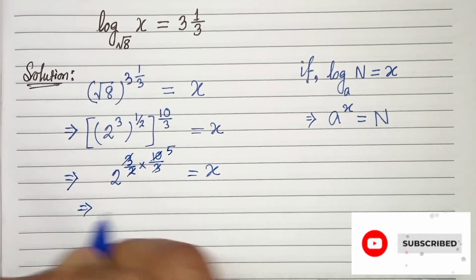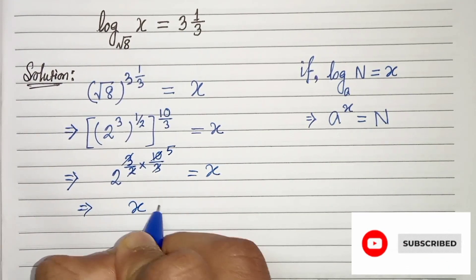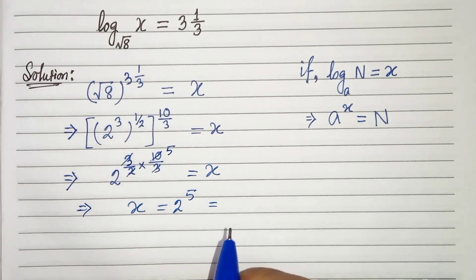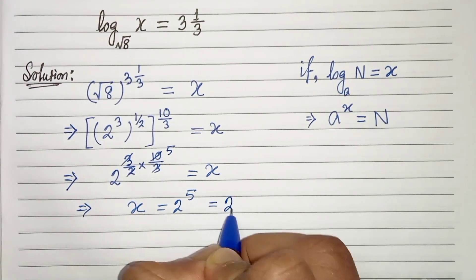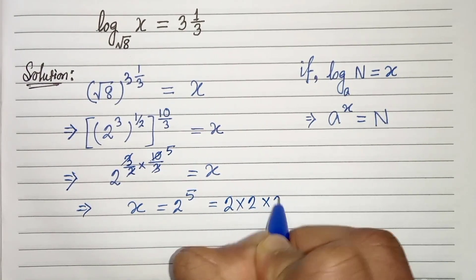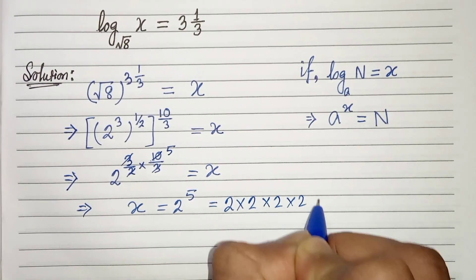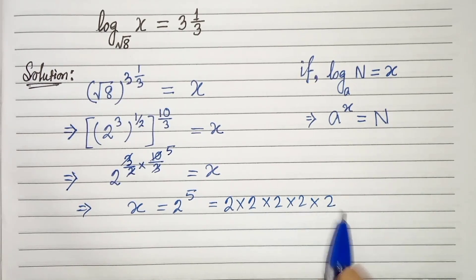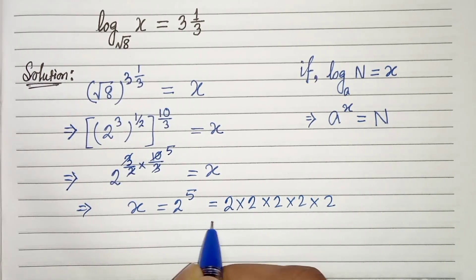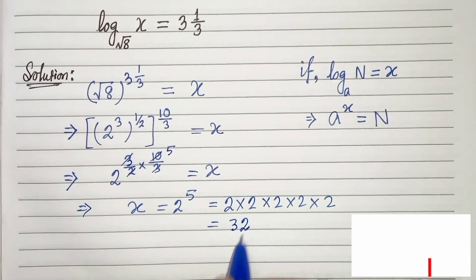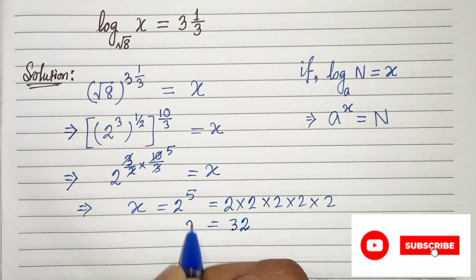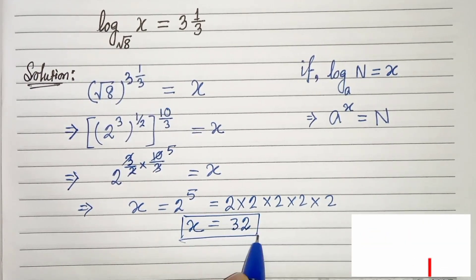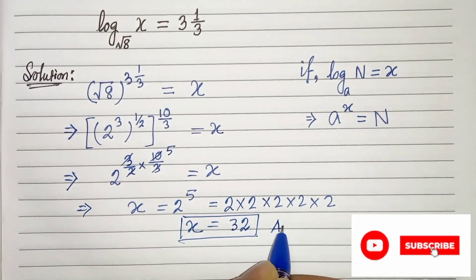So our x is 2 to the power 5, which is 2 times 2 times 2 times 2 times 2 — giving us 4, 8, 16, and 32. So our x is 32. This is our solution. Thanks for watching.